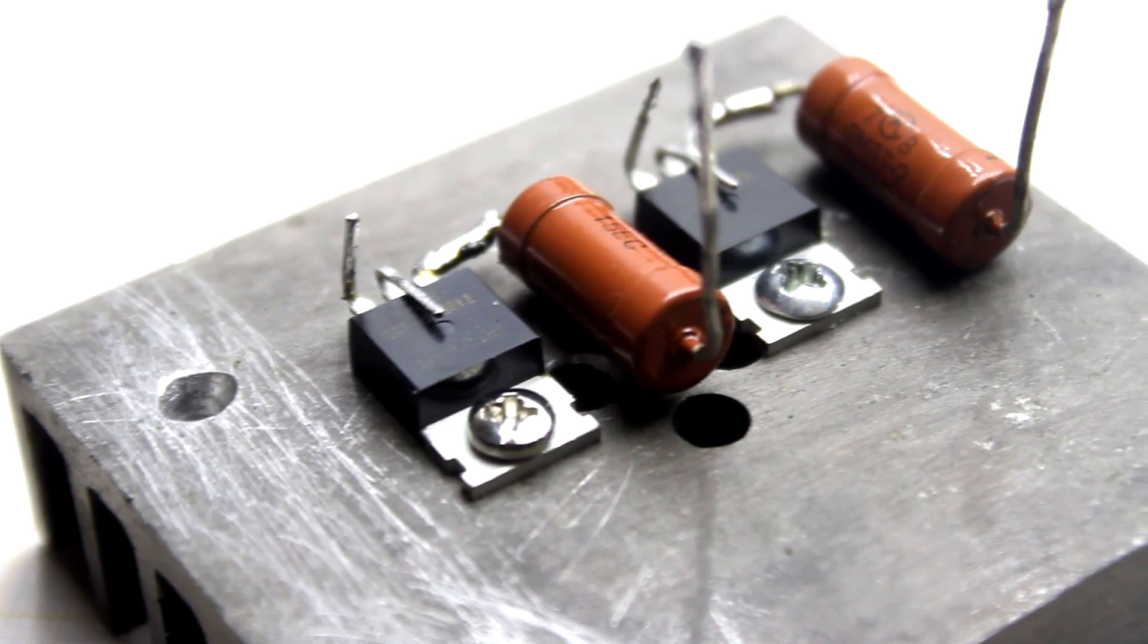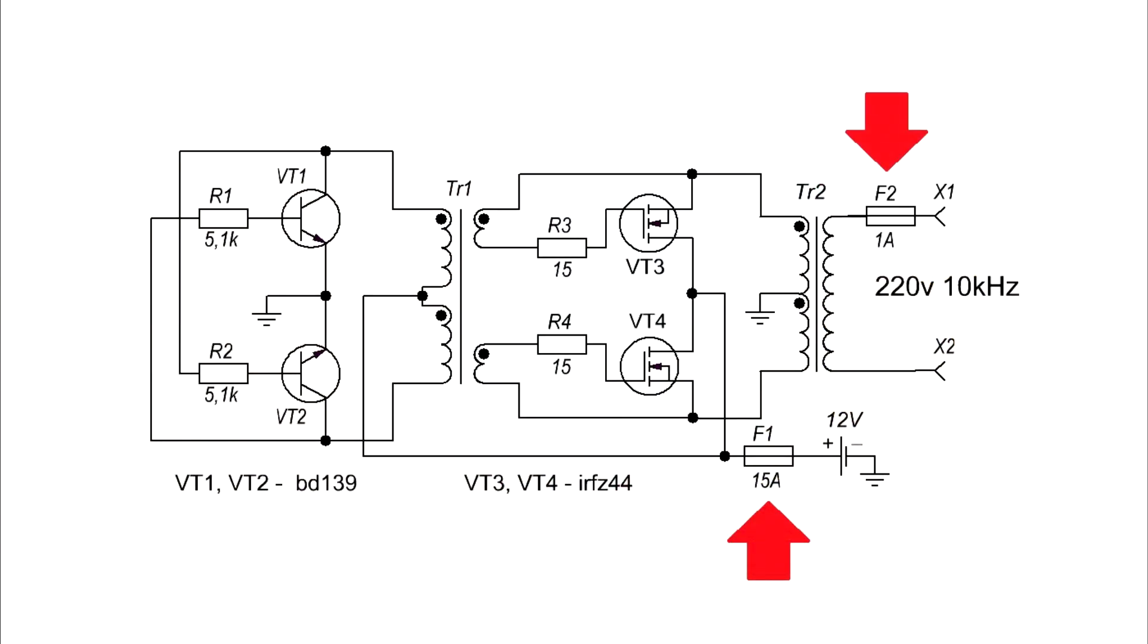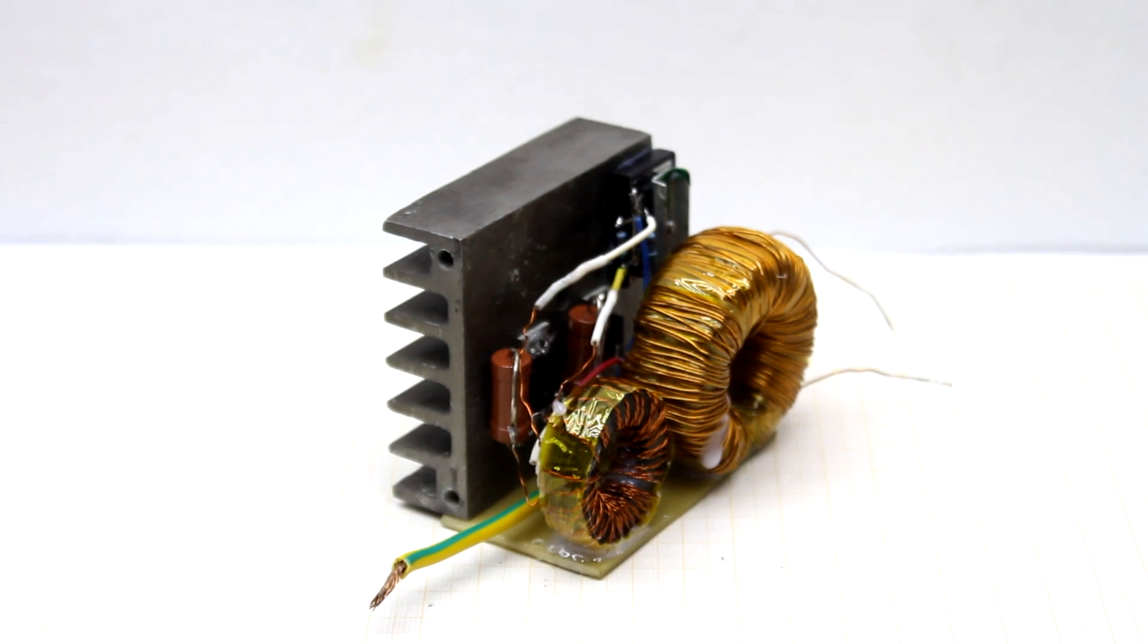Unlike the original circuit, this option is afraid of short circuits at the output, so the circuit is protected by a pair of fuses. They are selected based on the output power of the converter.